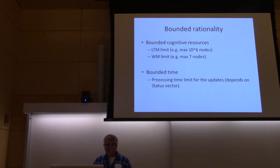We also want our model to have bounded rationality. We use fixed limits for the long term memory capacity like 10 to the power of 6 nodes, and the working memory limit of max seven nodes. We also use bounded time for our decision making and for the updates in general, and the bounded time available would depend on the status vector. If we're in a desperate situation, for example when some gauge is very low, then we have less time to reflect.